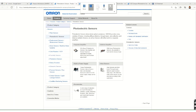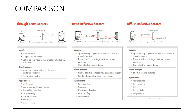In summary: through beam sensors are the most accurate, have the longest sensing range, and detect objects independent of color and reflectability since anything interrupting the path is detected. Retro reflective sensors are space-saving because emitter and receiver share the same housing, allow faster installation, and are cost-effective since the retro reflector requires no wiring. Diffuse reflective sensors are even more compact — no retro reflector needed — and installation is very fast with only one device to mount.